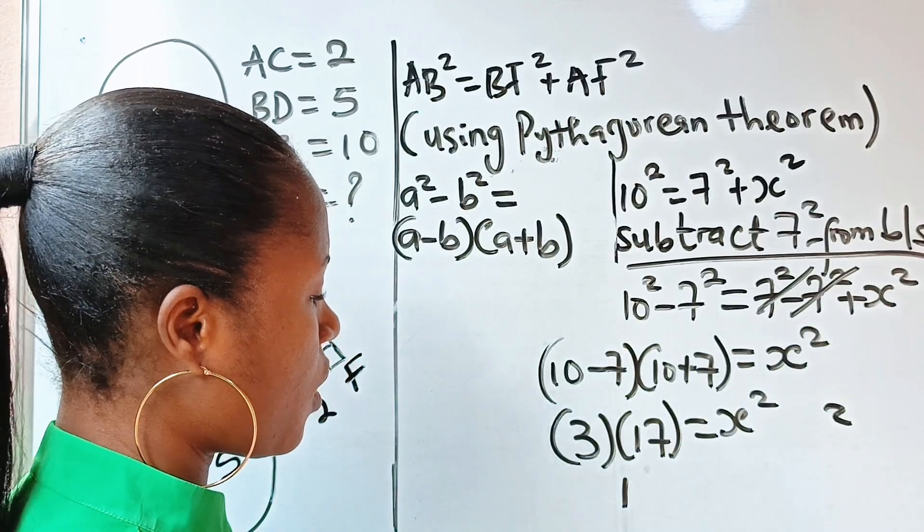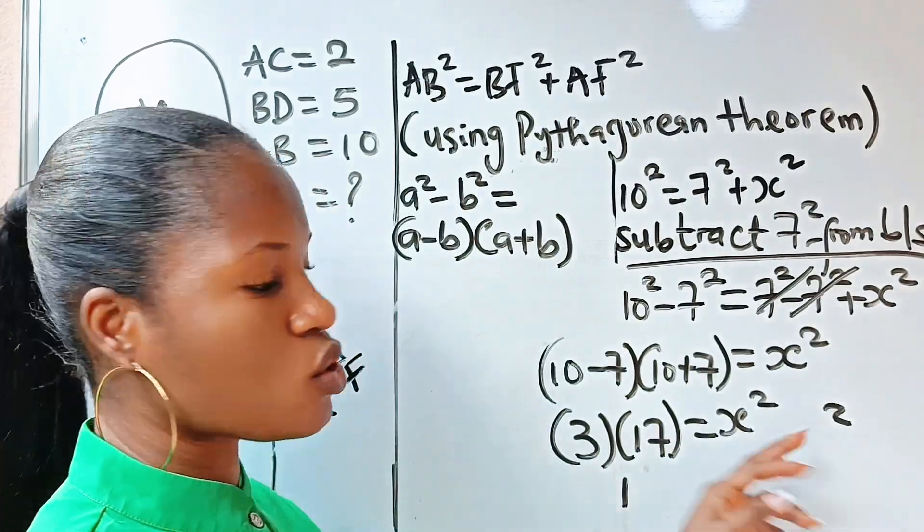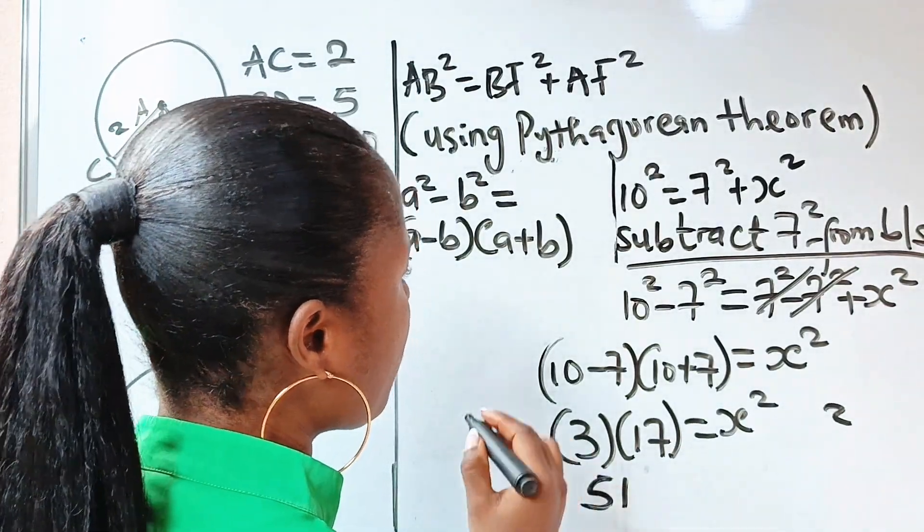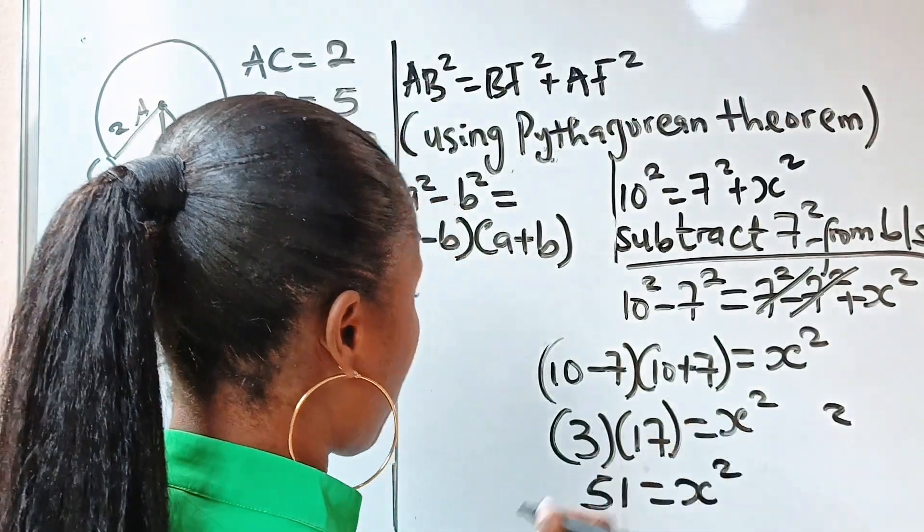We write 1 and carry 2. 3 times 1 is 3 plus 2 is 5. So we have 51 is equal to x squared.